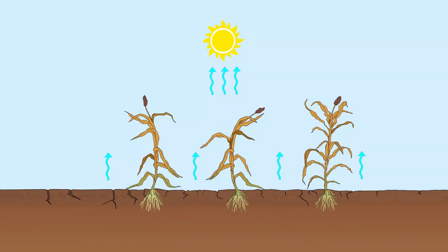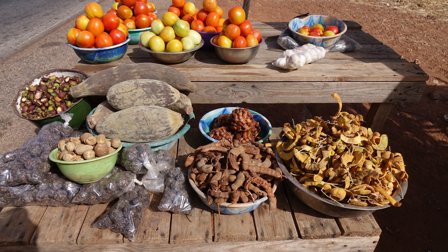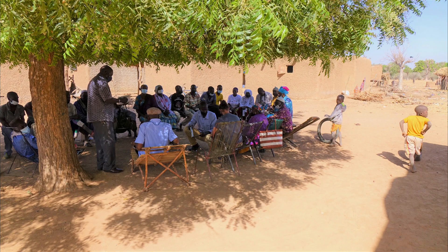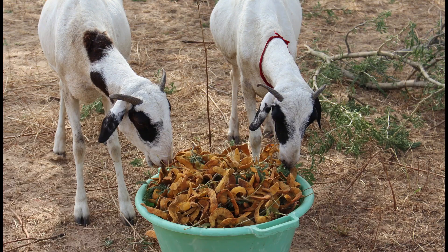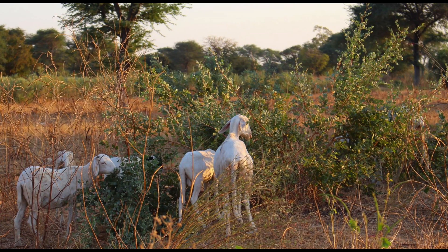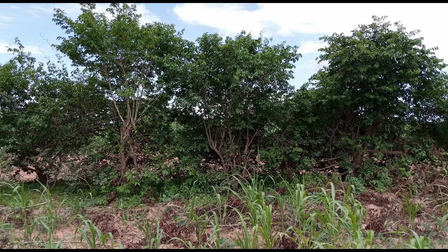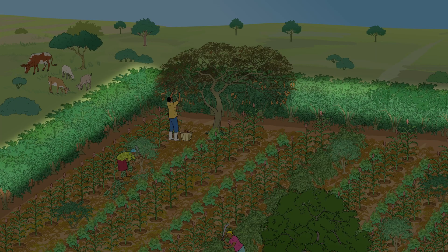Les paysages dépourvus d'arbres et de buissons sont plus secs, avec moins de pluie. Les arbres et les arbustes fournissent de nombreux produits qui peuvent être utilisés pour la vente et la consommation. Les arbres fournissent de l'ombre aux personnes et aux animaux pendant la saison chaude, et du fourrage pendant la saison sèche lorsqu'il est rare. Les arbres et les arbustes peuvent être plantés en ligne comme des cultures vivantes pour éloigner le bétail des cultures et protéger le champ de l'érosion et du ruissellement.